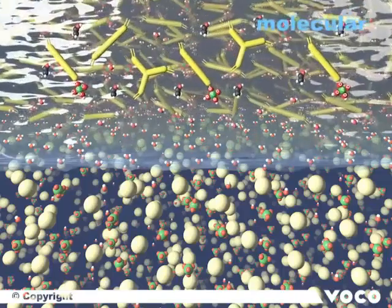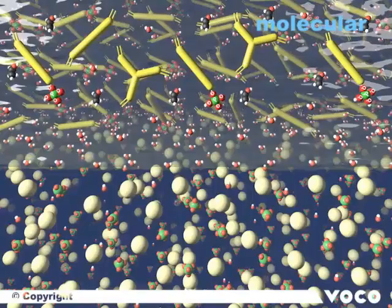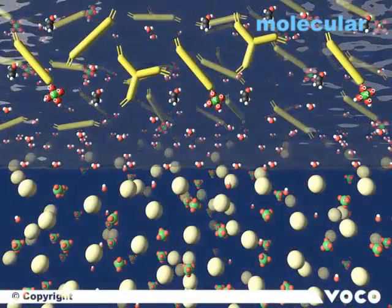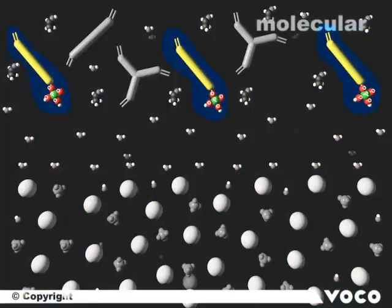The adhesive is applied. For reasons of better clarity, only the first level is shown in the next step. Here all components from the adhesive liquid are depicted. Once again for repetition: the acidic adhesive monomers, the cross-linking monomers, and the solvents ethanol and water.